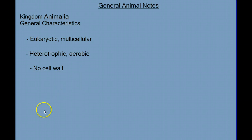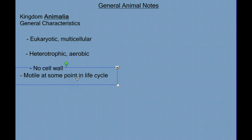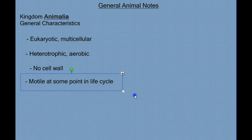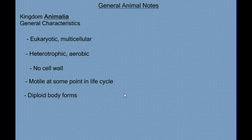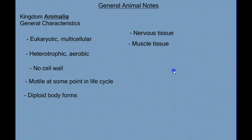Those are the primary characteristics required for something to be an animal. But there are other animal characteristics. All animals, at some point during their life, have some motility — they can move, maybe not in their adult form, but at some point. In animals, unlike some plants and fungi, when we look at an animal you're seeing the diploid body form. And there are two types of tissue unique to animals that we don't see in other organisms: nervous tissue and muscle tissue.